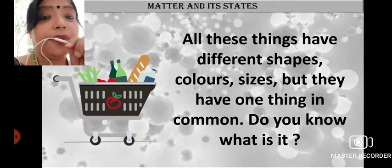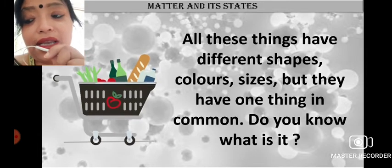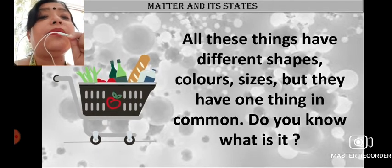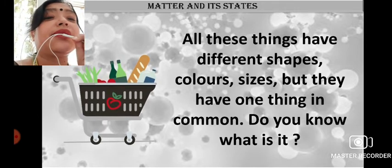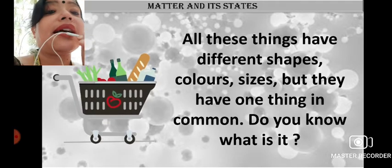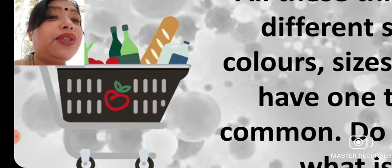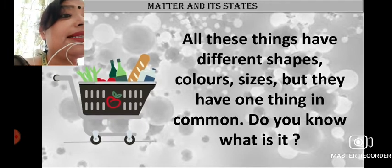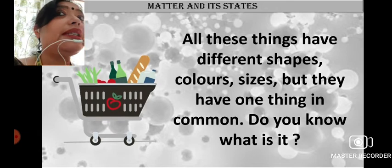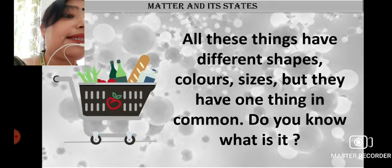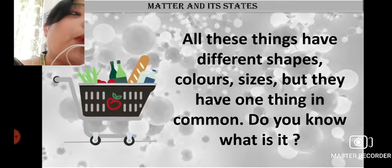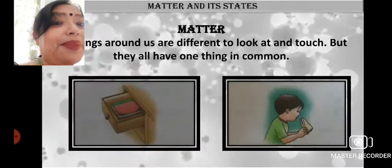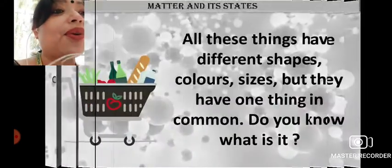You can see in the picture different types of substances all together. All these things have different shapes — you can see a green-shaped bottle, a yellow-colored something, and different things in the picture. So ultimately, different things here have different shapes, different colors, and even different sizes. But they have one thing in common. Can you tell me what the common thing is? Yes — this is all about a substance, or matter.